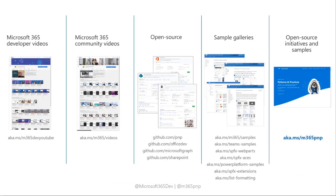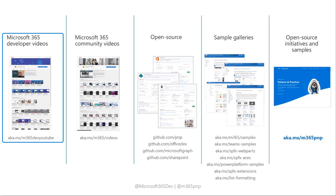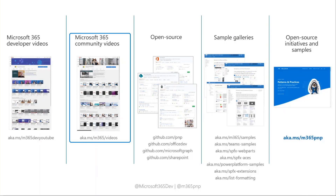The main link you need to know is aka.ms/m365pnp. That's going to get you the all-up landing page for all of the Patterns and Practices program, spanning our developer videos — topic-focused videos to get you started on various developer activities such as auth, adaptive card extensions, or SharePoint Framework. We've got our community videos, which are recordings of this call, the other Thursday call, our Tuesday calls, and various other community calls and videos — more informational but usually include great demos.